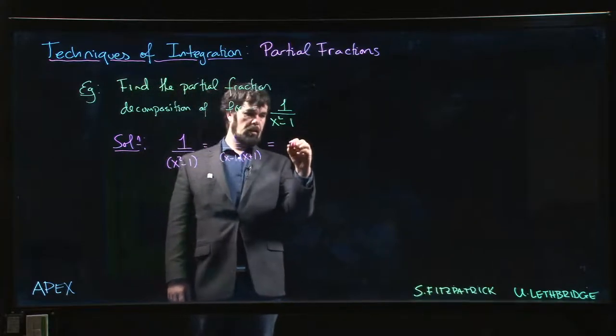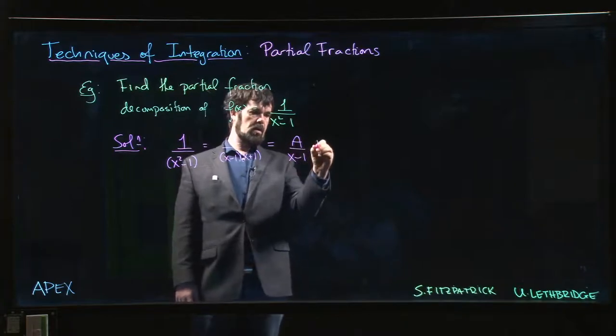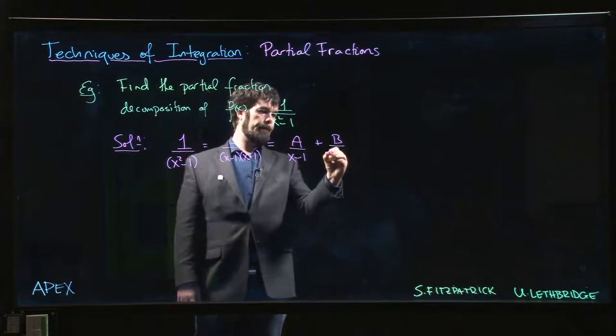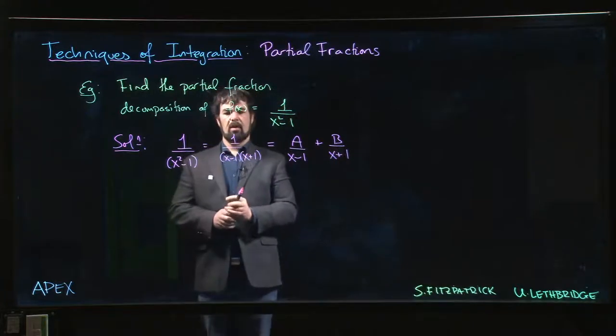And so we expect a partial fraction decomposition that looks like A over x minus 1 plus B over x plus 1.